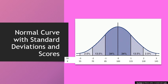Let's look at a normal curve with standard deviations and scores. If you label the normal curve at the bottom with standard deviations going from negative 3 on the far left, to 0 at the mean, to positive 3 on the far right, that covers 99.9% of all scores. Between negative 1 and positive 1 standard deviation is about 68 to 70% of all scores, and between negative 2 and positive 2 standard deviations is about 95% of all scores.